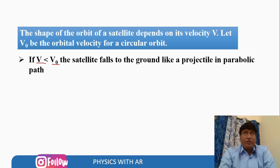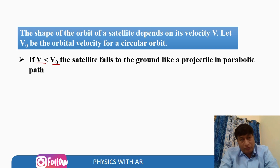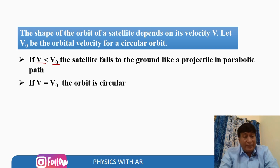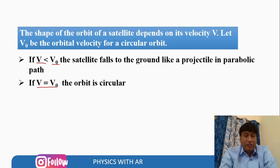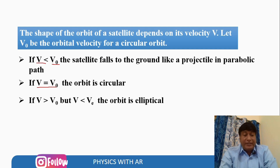The orbital speed for Earth is approximately 7.92 km/s. If the velocity is less than that, the object falls back to the surface. In the second case, if the speed equals v₀, the object moves in a circular orbit. If the speed is greater than v₀ but less than the escape velocity, the orbit is elliptical.